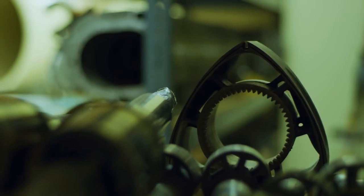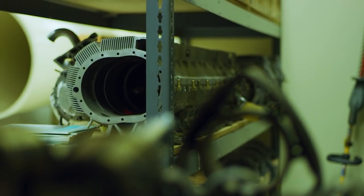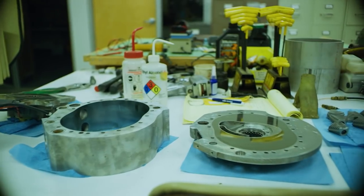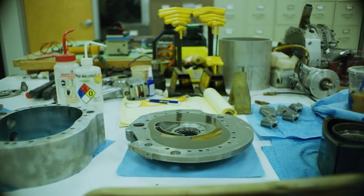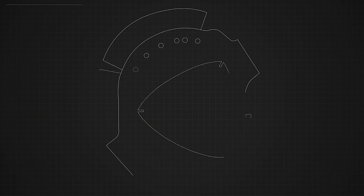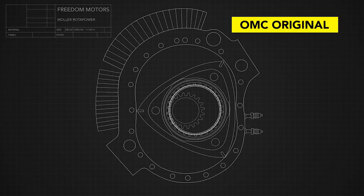Freedom Motors acquired a company called OMC, which had produced 65,000 of these rare rotary type engines for their snowmobiles. Freedom Motors replaced the rotor bearing with a resilient high load counterpart made by IKO.